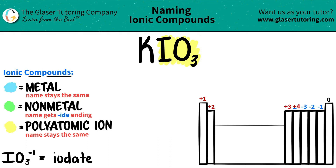The only element left is potassium. If we look at where it is on the periodic table, K is right here in group one. All of group one are metals except for hydrogen, so potassium is a metal.